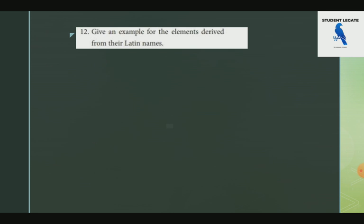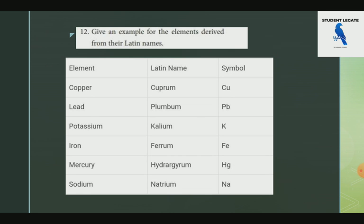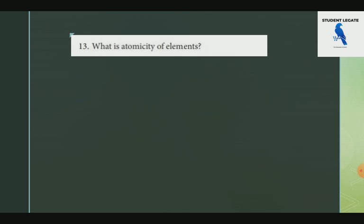Some elements have chemical symbols derived from Latin. For example: Copper is Cu (from Cuprum), Lead is Pb, Potassium is K (from Kalium), Iron is Fe (from Ferrum), Mercury is Hg (from Mercurium), Sodium is Na (from Natrium).